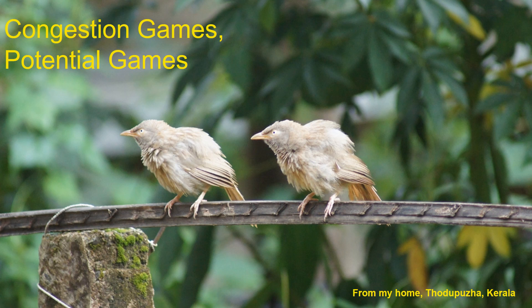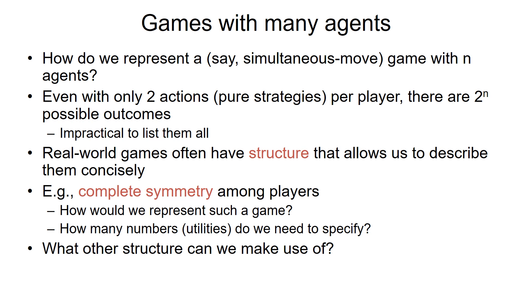So in this session we will cover congestion games - games with many agents. How do we actually represent a game with many agents? Even with only two actions per player, there are 2 to the power n possible outcomes, so it is very difficult to list all of them.